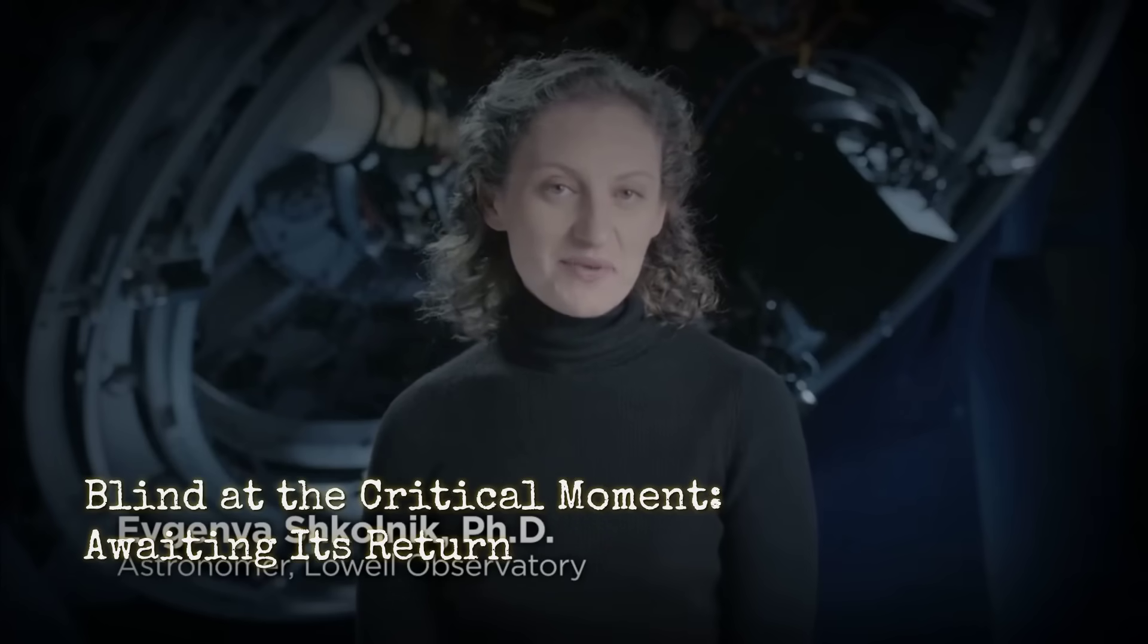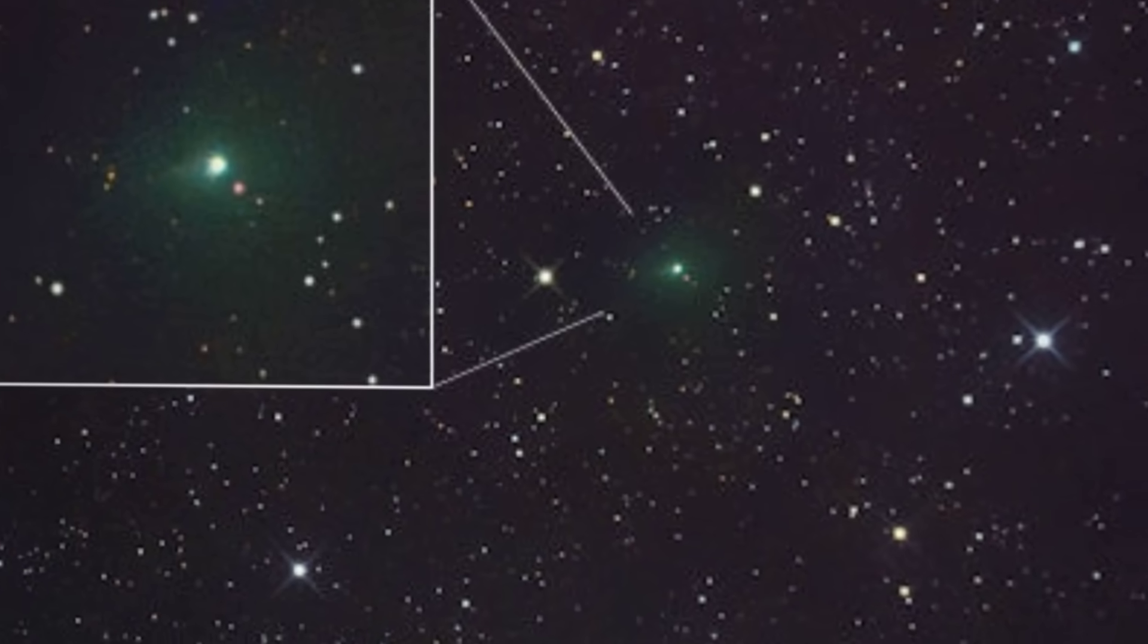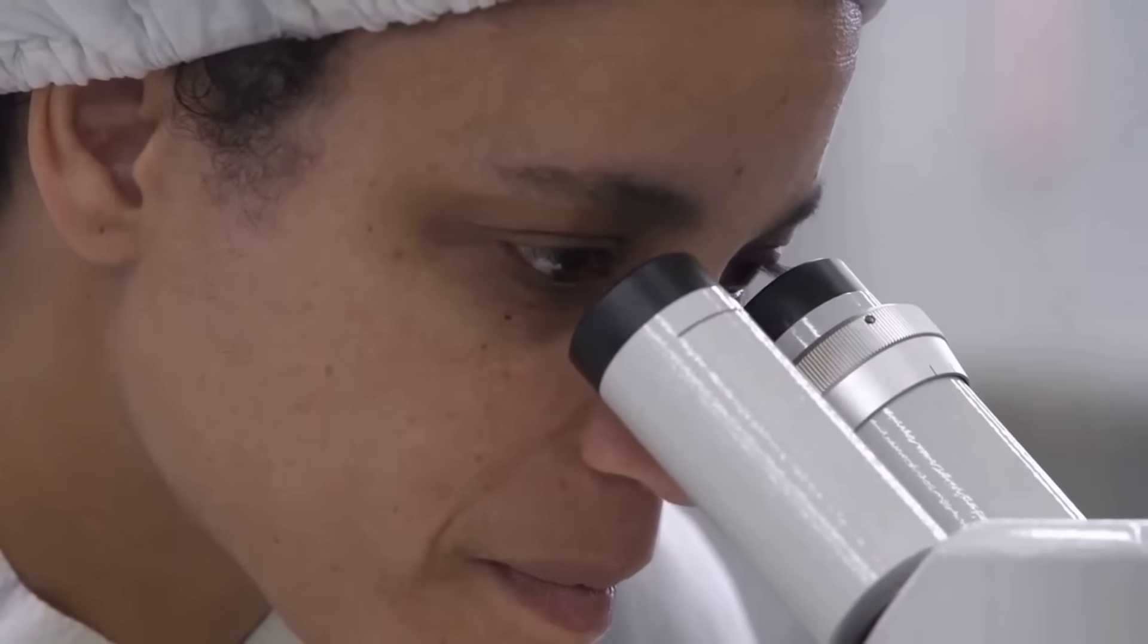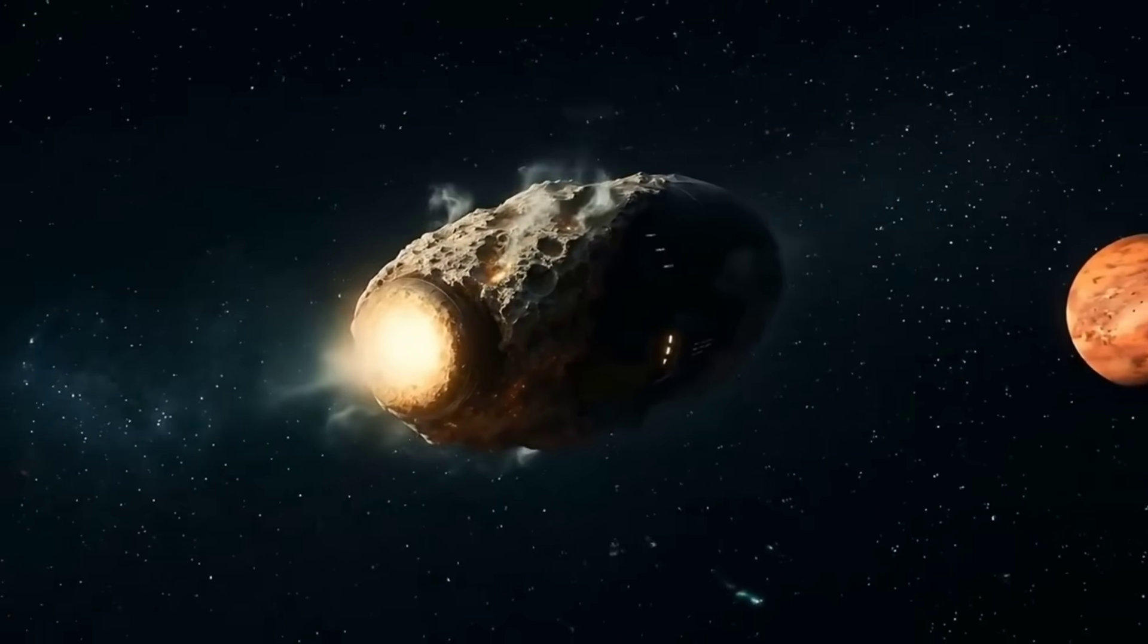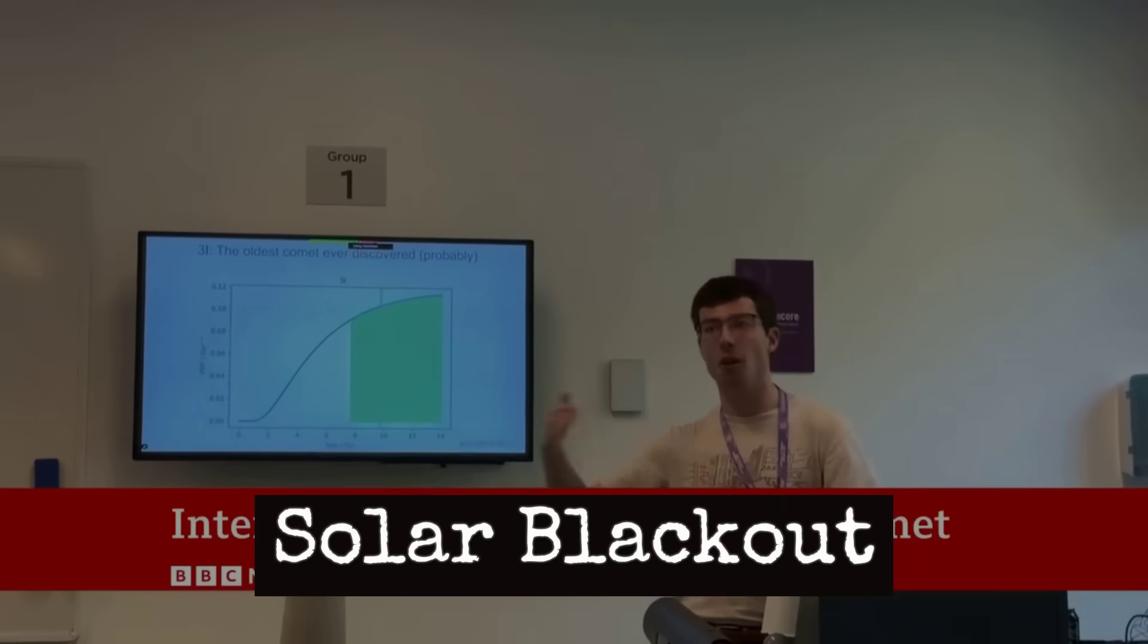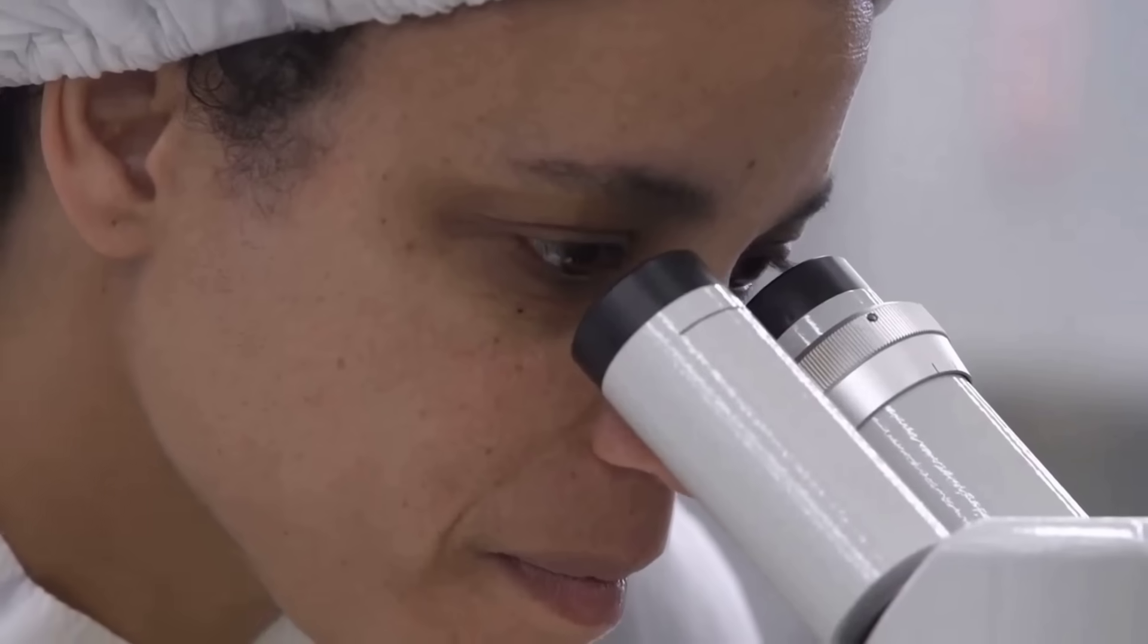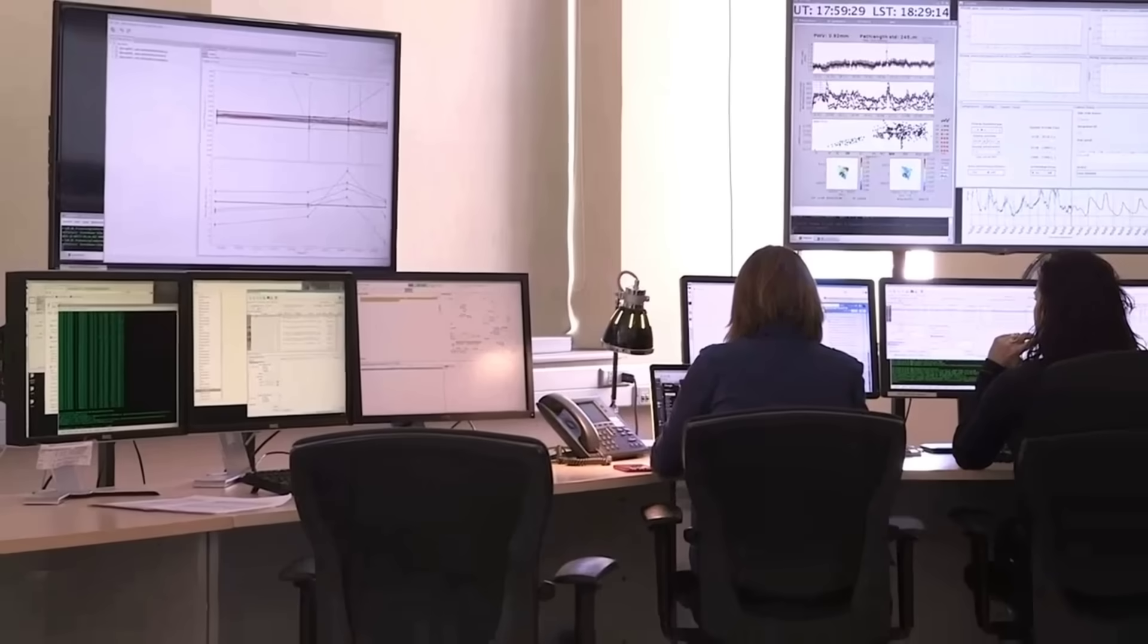I personally think the most interesting aspect is what 3I/Atlas can teach us about the diversity of objects in our galaxy. Every interstellar visitor is a free sample from another stellar system. We didn't have to send a probe trillions of kilometers. The universe delivered this object to our doorstep. The key takeaway is that 3I/Atlas represents a unique opportunity to study material from beyond our solar system. Whether or not it influences the sun or earth, the scientific value is immense.